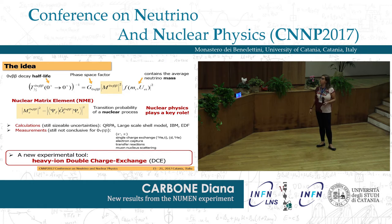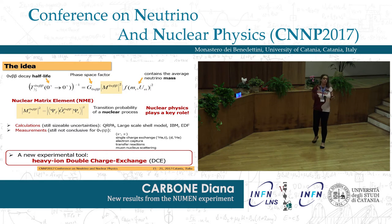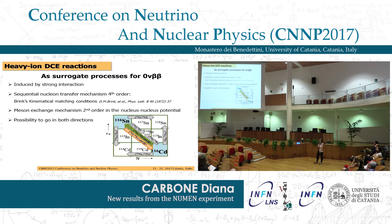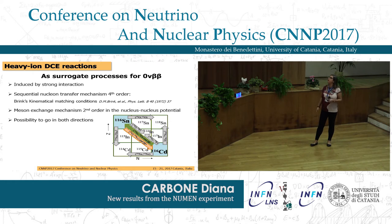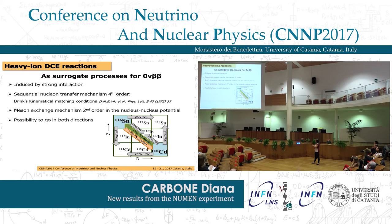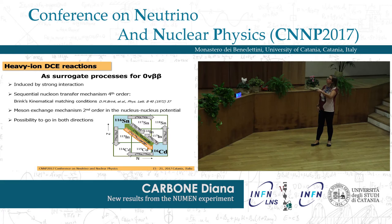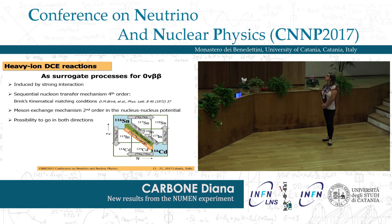What we are proposing in the NUMEN project is another experimental tool: the use of heavy-ion double charge exchange reactions. If we want to use these reactions as a surrogate process for the nuclear part involved in neutrino-less double beta decay, we have to keep in mind that they are mediated by strong interaction. If we want to study the diagonal process connecting cadmium-116 to tin-116, there is the possibility of the diagonal meson exchange mechanism, but we also have to account for the possible role of multi-nucleon transfer processes.